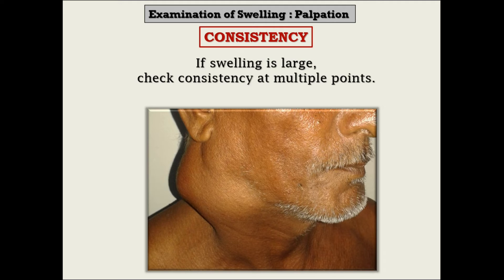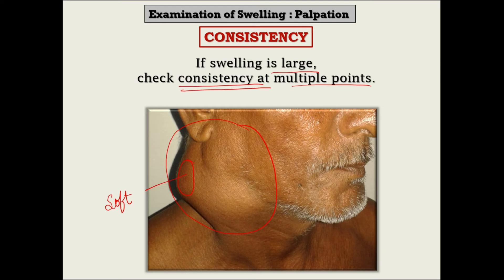As we saw with temperature, when examining a large swelling, check consistency at multiple points. In a tumor with hard consistency, if there is necrosis at some point, the consistency at that point will be different — say, soft. Similarly, if there are multiple enlarged lymph nodes and an abscess forms in one of them, the swelling will feel firm everywhere except at the point of abscess where it will feel soft. This special difference will be missed if you do not assess the swelling at multiple points.